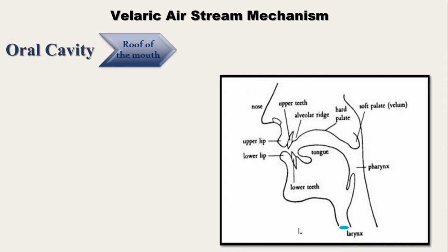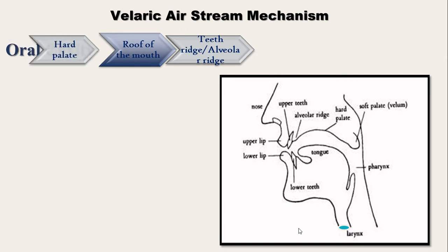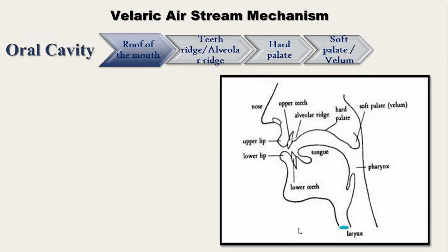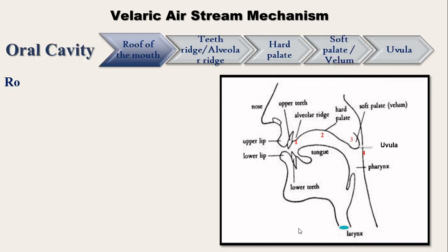The oral cavity contains first the roof of the mouth. This roof of the mouth is divided into four parts. They are namely the alveolar ridge, the hard palate, the soft palate, and the uvula.